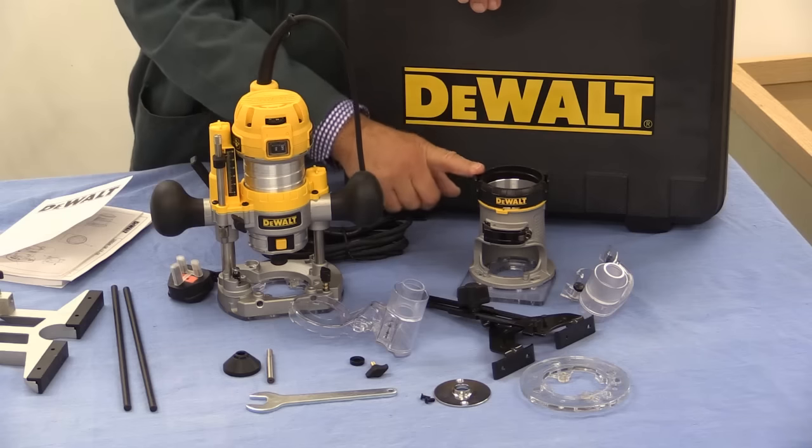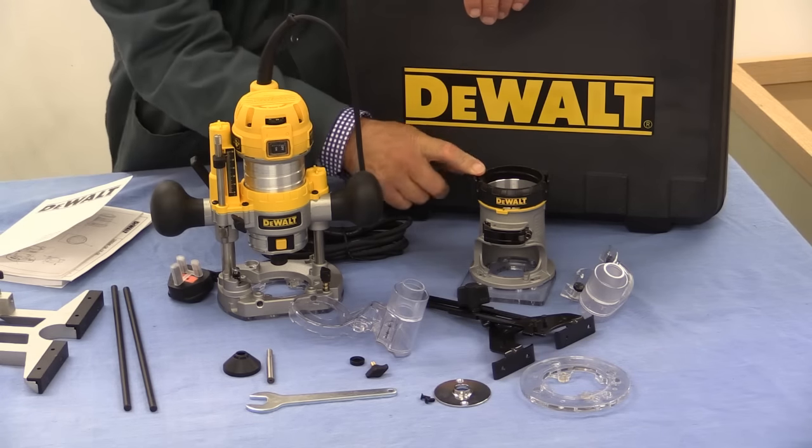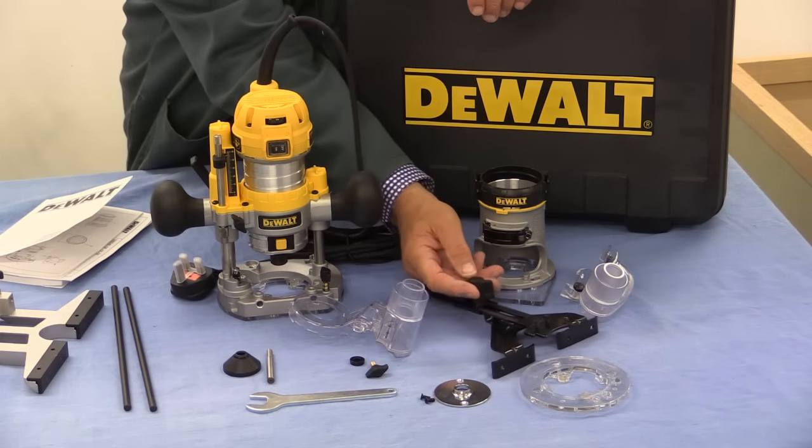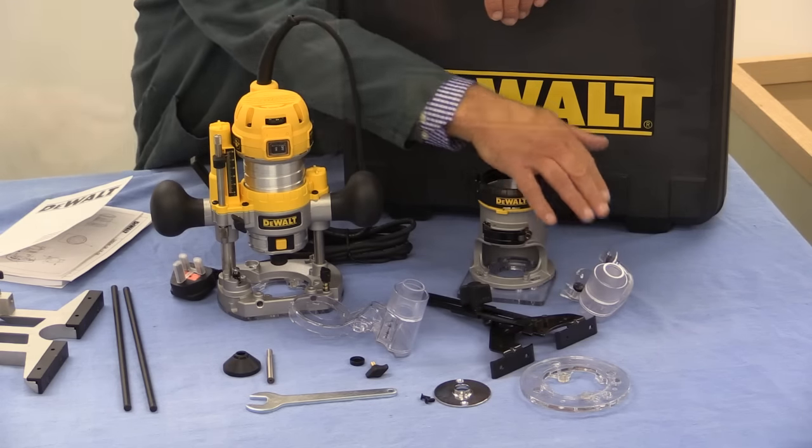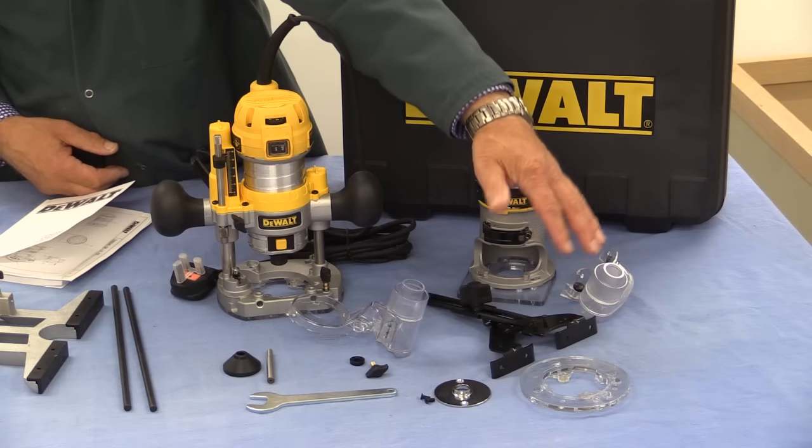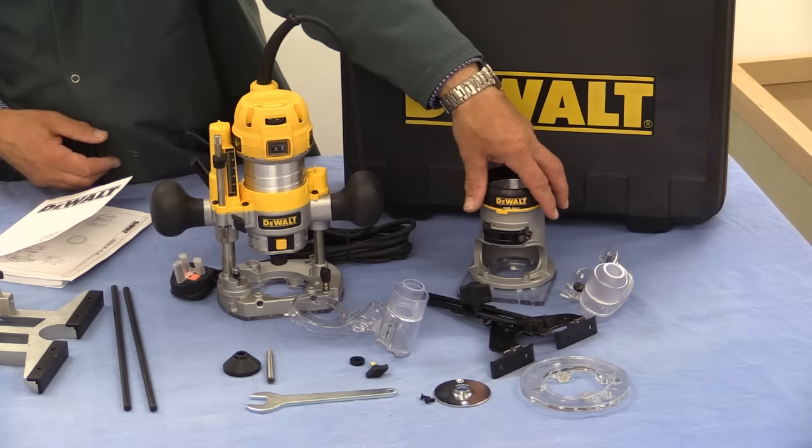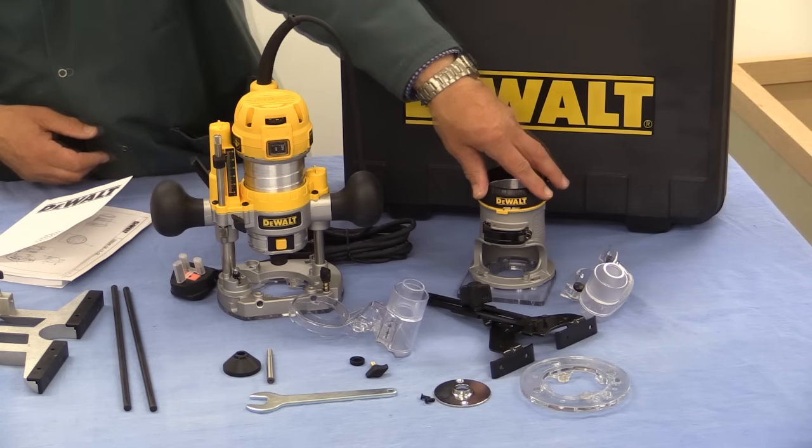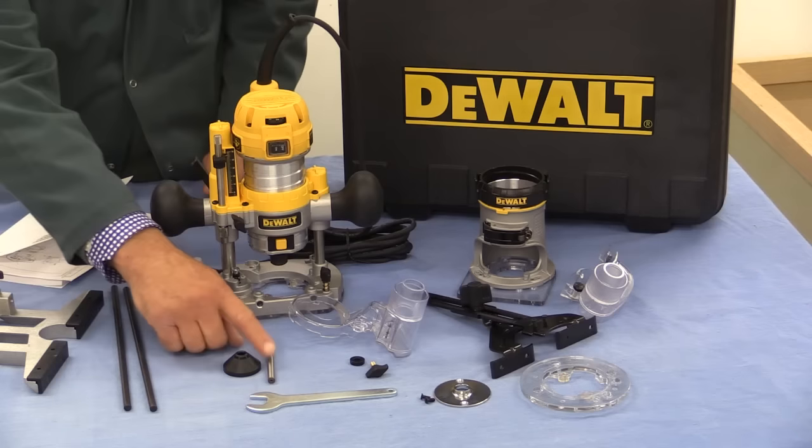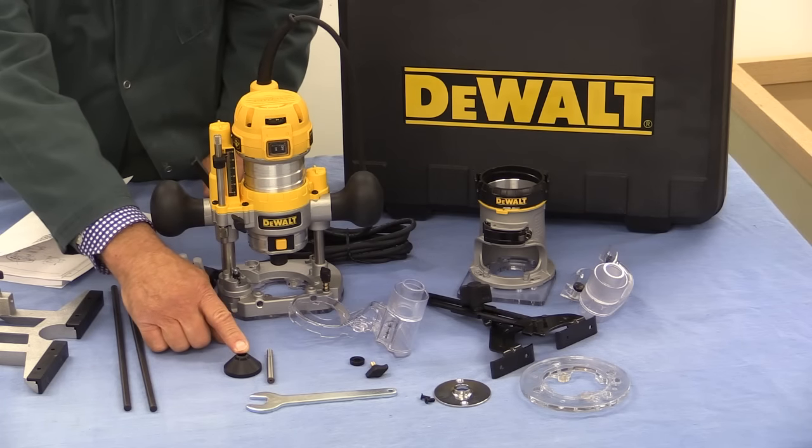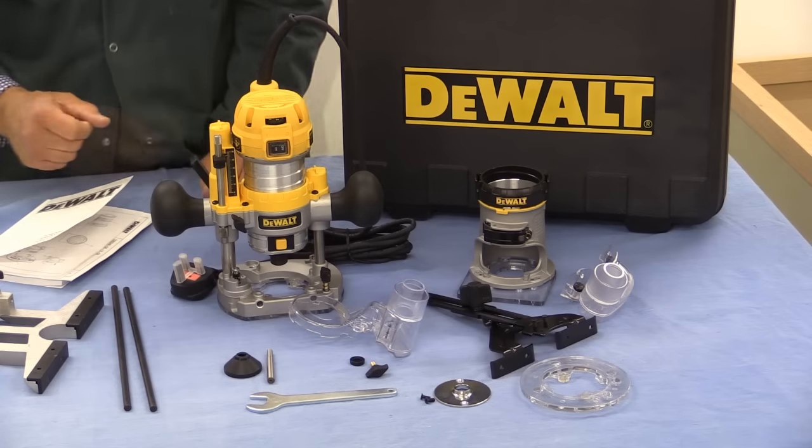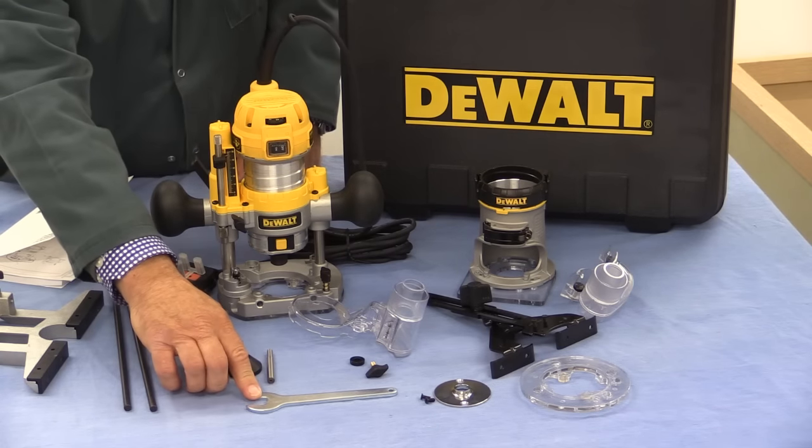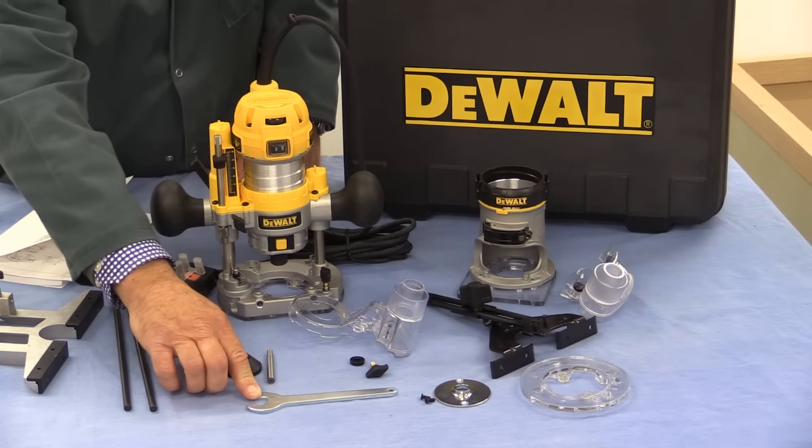You also get the fixed base, and that also comes with its own basic parallel fence and a dust collection adapter. There's a round sub base, which is designed to fit on the bottom of the fixed base, and also a centering pin and cone, as well as a 17mm guide bush. And of course, it comes with a tool to fix the cutters in place.